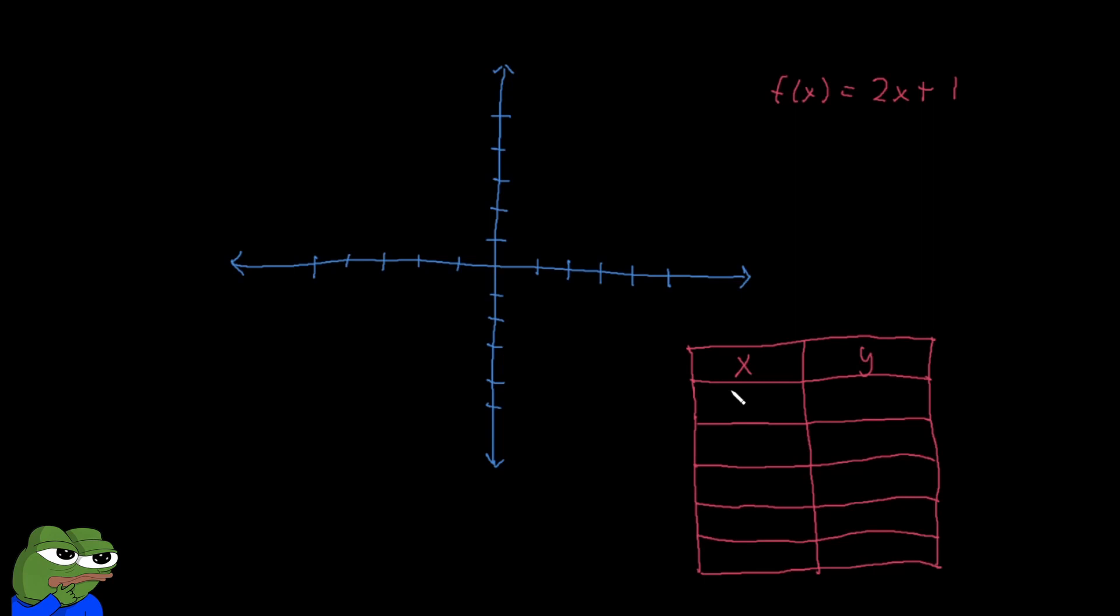For example, we can fill up our X and Ys here. So if our X is 0, then we look at this function, right? We replace this X with 0. You end up with 1. So we can continue. If we put X as 1, this entire expression will become 2 plus 1, which is 3. And if we put X as 2, this becomes 5. If we put X as 3, this becomes 7. And if we put X as 4, this becomes 9.